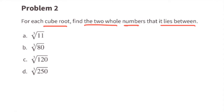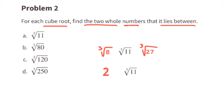Problem number two: for each cube root, find the two whole numbers that it lies between. Part a: the cube root of 11 lies between the cube root of 8 and the cube root of 27. That's because the cube root of 8 is 2 and the cube root of 27 is 3.